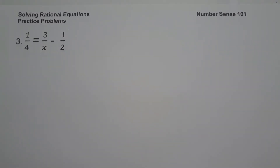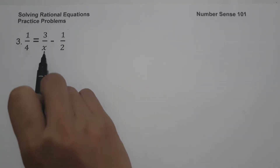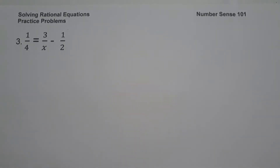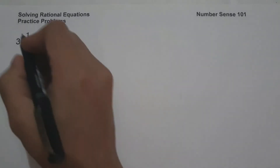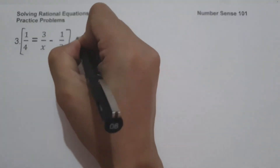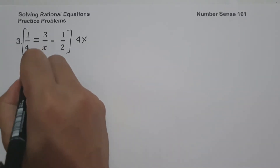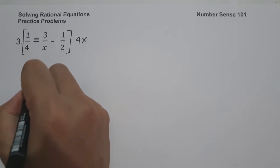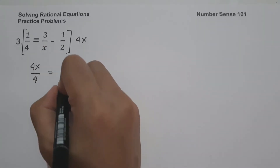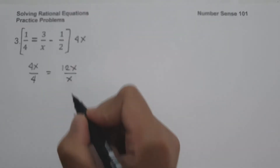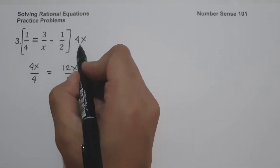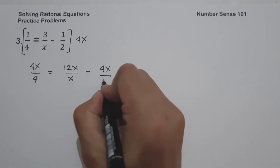Example number 3: we have 1 over 4 equals 3 over x minus 1 half. As you can see, we have 4, x, and 2 as our denominators. So let us multiply the whole equation by the least common multiple of the denominators, which is 4x. So we have 4x multiplied by 1 is 4x over 4, equals 3 times 4x which is 12x over x, and 1 times 4x is 4x over 2.